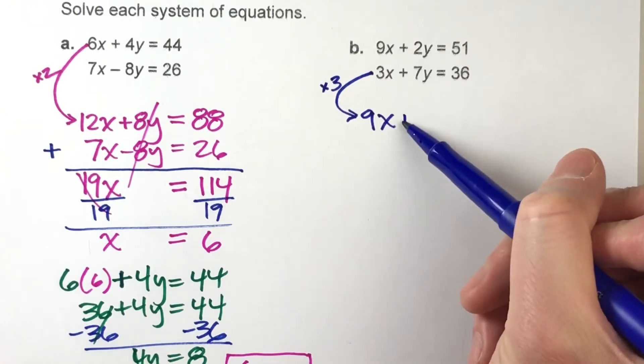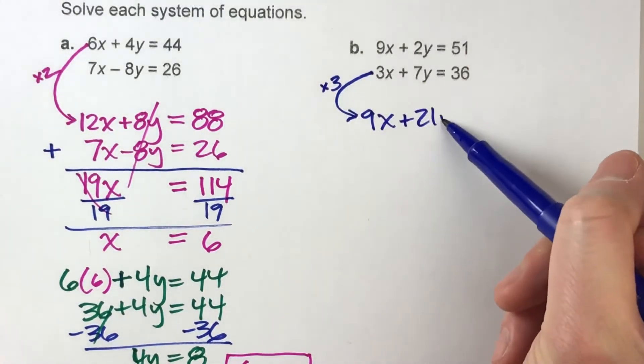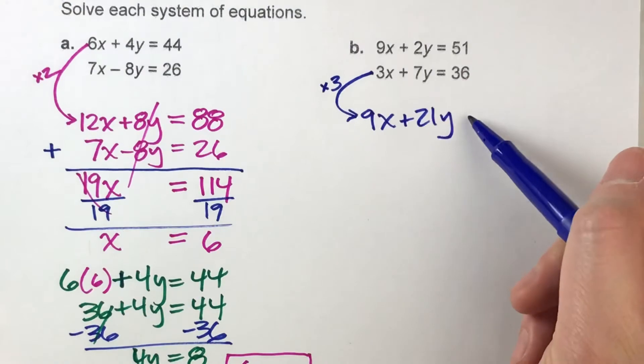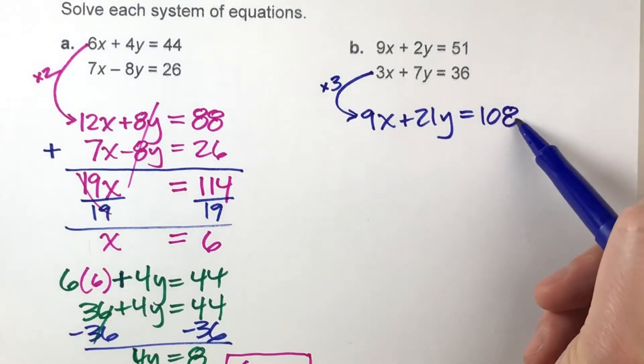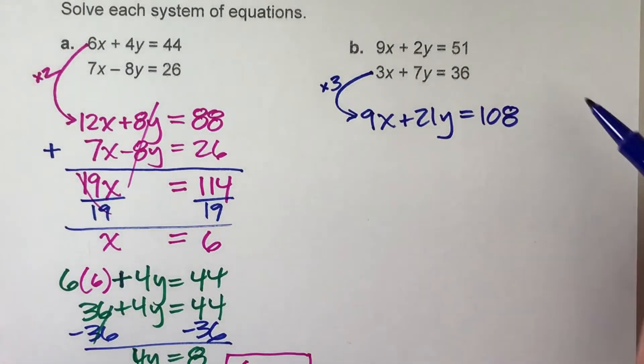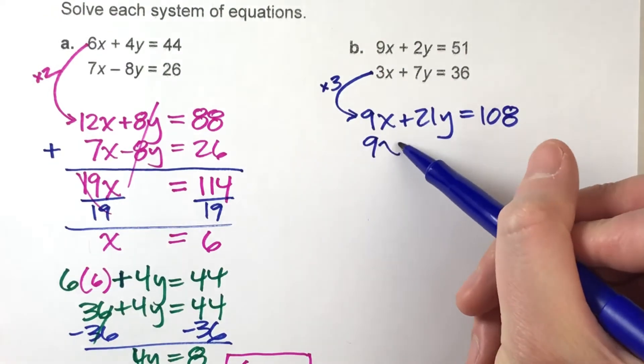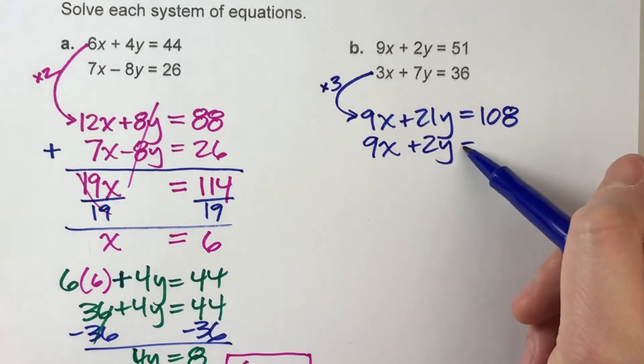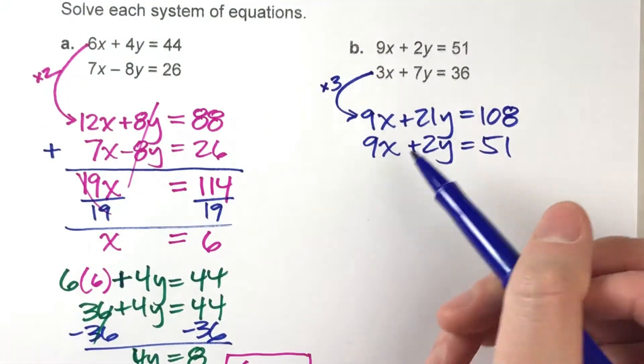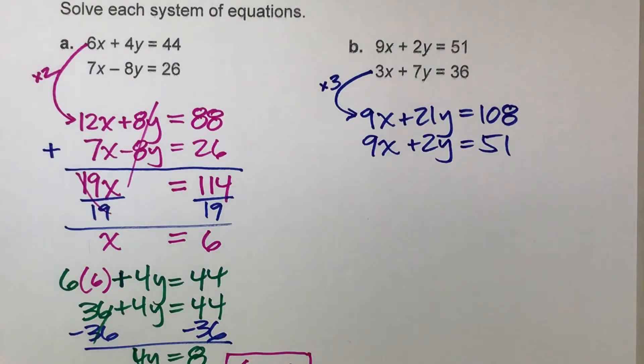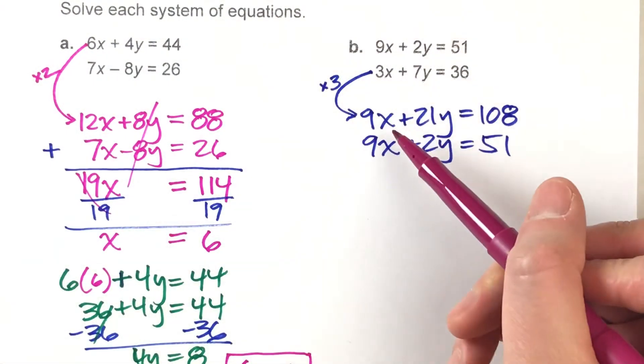3 times 3X is 9X, 3 times 7Y is 21Y, 3 times 36 is 108. Now I'll take my first equation and I'll just write it underneath. Look at that—see my X's are all matched up, ready to go.